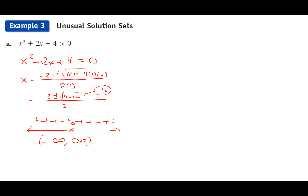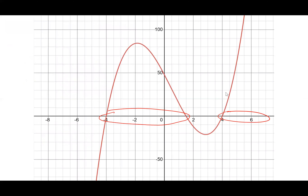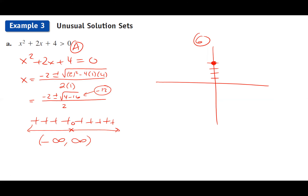Graphically: this is an upward-opening parabola with a y-intercept at 4. Since the discriminant was negative, there are no x-intercepts. The entire parabola sits above the x-axis. So when is this graph greater than zero? Always — the answer is (-∞, +∞). For part b, flipping the inequality to less than zero: the graph is never below the x-axis, so the answer is the empty set.